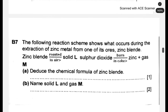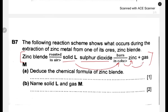We are on to question three. The following reaction scheme shows what occurs during the extraction of zinc metal from one of its ores. Zinc blende is roasted in air to form solid L and sulfur dioxide. Then solid L is heated with coke to form zinc and gas M. The question asks: give the chemical formula of zinc blende. As explained previously, the chemical formula is ZnS.